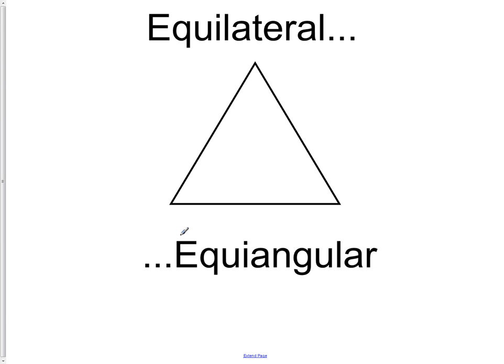Now do not confuse the isosceles triangle with an equilateral triangle. An equilateral triangle is a triangle in which all sides are equal. The isosceles triangle, we only have two.